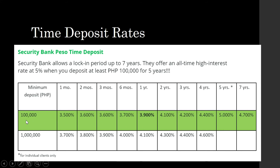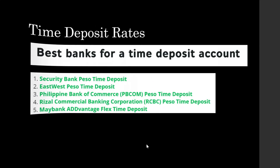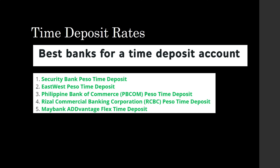For a minimum deposit of 100,000 pesos, Security Bank will give you an interest rate of 3.9%, which is well above the inflation rate of approximately 2.3% to 3% — let's say 2.6%. For a deposit of 1,000,000 pesos, Security Bank will award an interest rate of 4.1%. So when we are looking for an interest rate, we must look for one that is greater than the prevailing inflation rate. These are the top 5 best banks for a time deposit account.